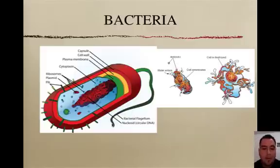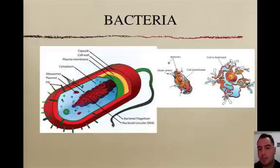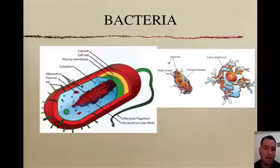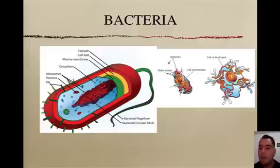So how do we kill bacteria? You can either wait for your immune system to destroy it with antibodies, or take medication called antibiotics. Antibiotics kill bacteria by destroying the cell wall. Once the cell wall is destroyed, water rushes in, the cell pops, and you kill the bacteria.